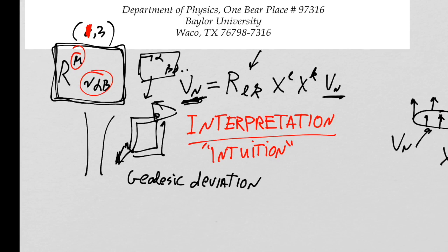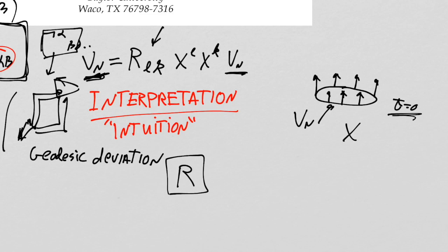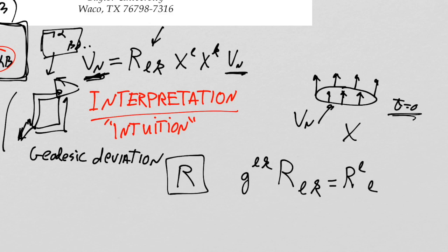So the goal of this lecture is to start a path to the same thing and come up with an interpretation of the Ricci scalar — or the curvature scalar. The curvature scalar R is defined by taking the Ricci tensor and contracting it with the metric to get a scalar we call R.